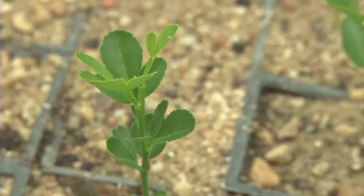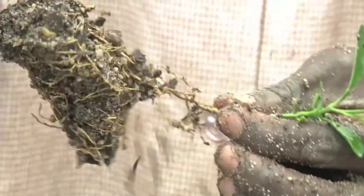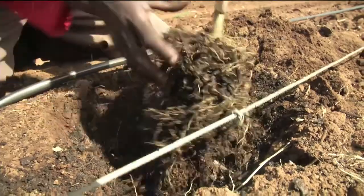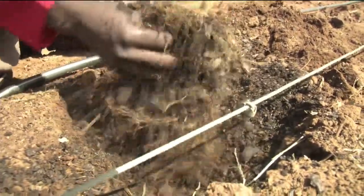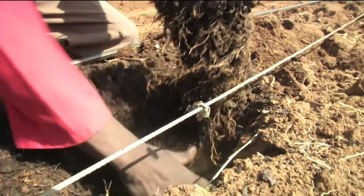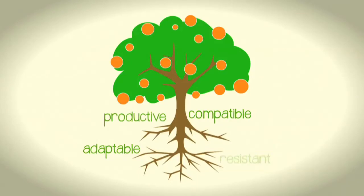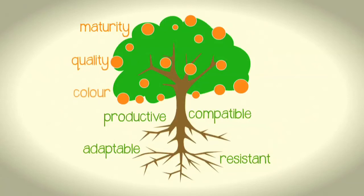Before selecting the right rootstock, it is important to be clear on the function of roots. Roots anchor the plant in the ground, absorb and transport water and nutrients into the plant, synthesize growth regulators, and store food reserves. The right sort of rootstock is one that is compatible with a fruit-bearing scion cultivar, adaptable to soil and climate conditions, makes the fruit-bearing scion more productive and vigorous, is resistant to pests and diseases, and influences fruit maturity, quality, colour, size, and yield.